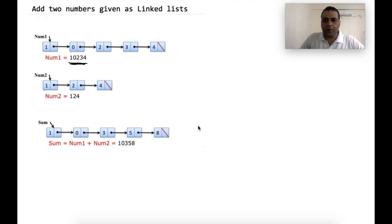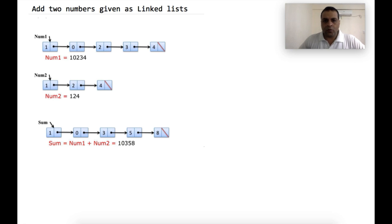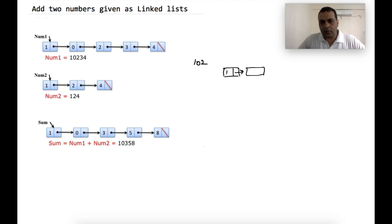Hi guys, my name is Kamal Rawat and in this video we are going to discuss yet another interview problem related to linked list. The question is as simple as adding two numbers. The only challenge is that the numbers are given in the form of a linked list. So if the number is 102, it is not given as an integer, but as a linked list where each node holds one digit. So 102 means the first node holds 1, the next node has 0, and the next node has 2.